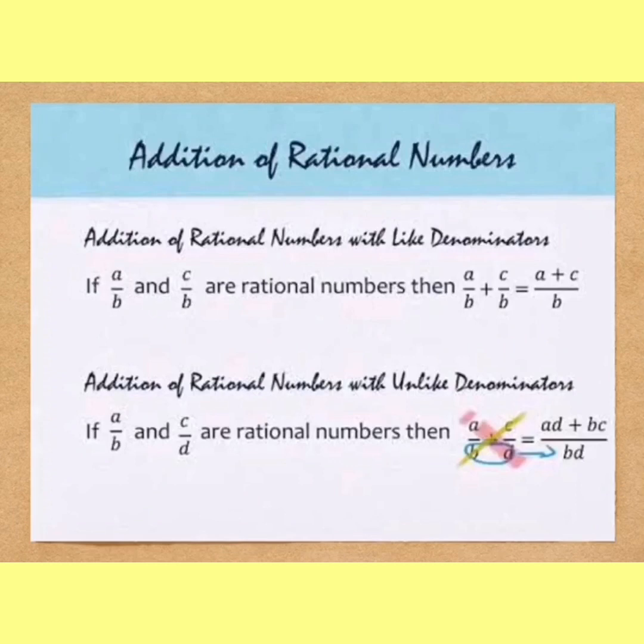Now, if we want to add rational numbers, then if they have same denominators, add the numerators as such. Like a upon b plus c upon b,